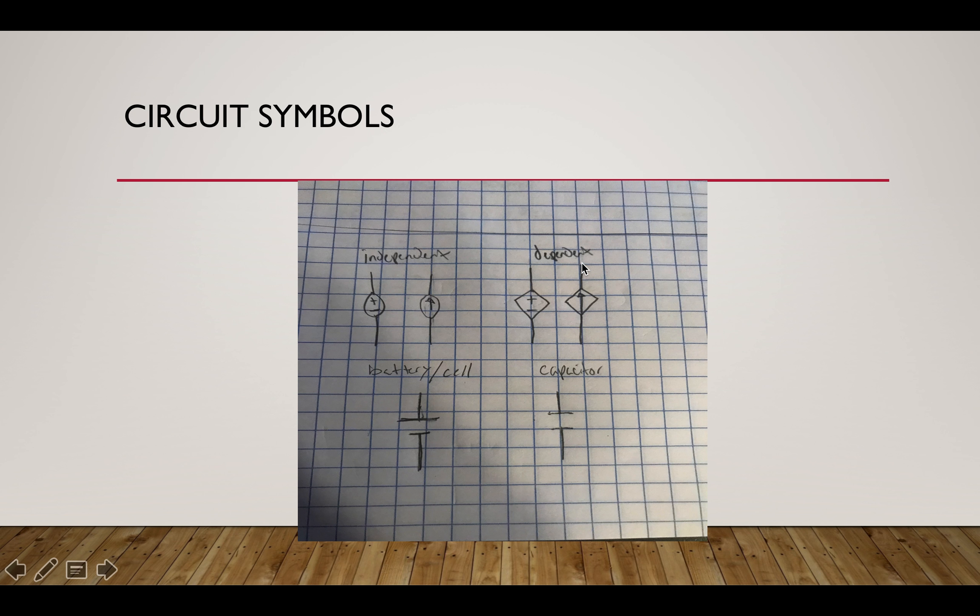This just means the current flow. And then we have the battery and the cell which is this symbol right here, the international symbol. You have one that is longer than the other, and then the symbol for the capacitor is they are equally in length.